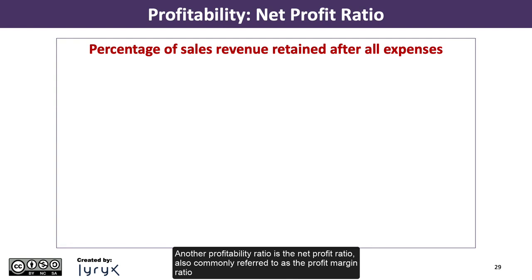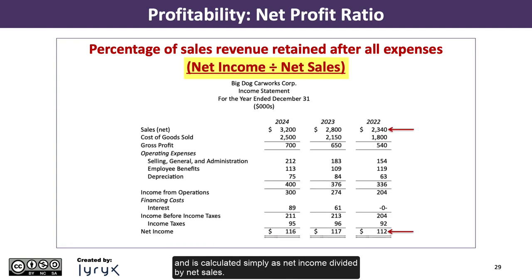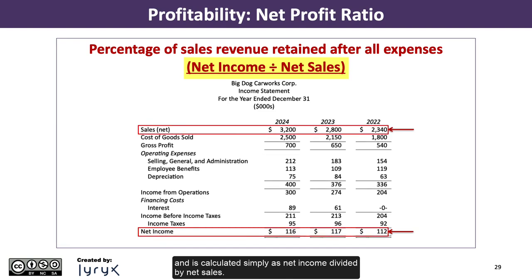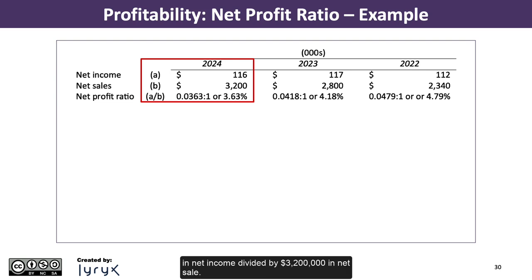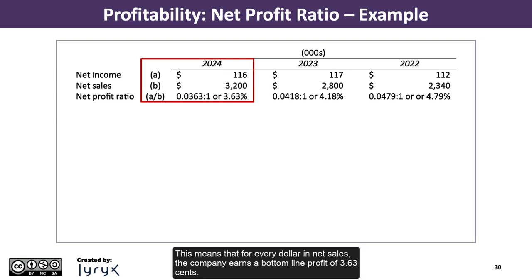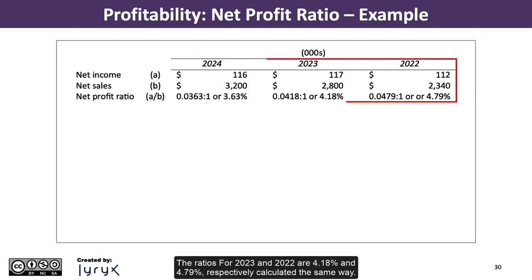Another profitability ratio is the net profit ratio, also commonly referred to as the profit margin ratio, and is calculated simply as net income divided by net sales. Big Dog's net profit ratio for 2024 is 3.63%, calculated as $116,000 in net income divided by $3,200,000 in net sales. This means that for every dollar in net sales, the company earns a bottom-line profit of 3.63 cents. The ratios for 2023 and 2022 are 4.18% and 4.79%, respectively, calculated the same way.